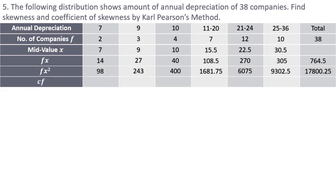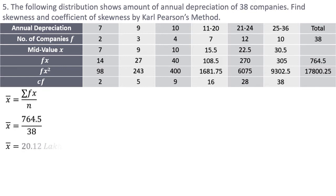The last column I need to prepare is the cumulative frequency, because I need to calculate median. The cf column will be: first frequency 2, then add 3 to get 5, add 4 to get 9, plus 7 gives 16, plus 12 gives 28, plus 10 gives 38. Now we have all the necessary columns. We start with the first calculation: mean = Σfx / n = 764.5 / 38.